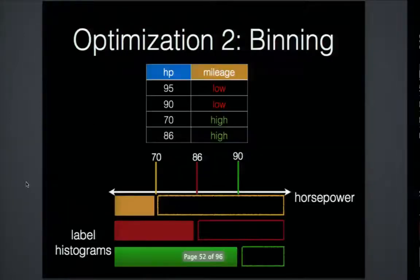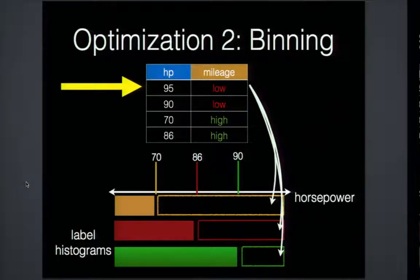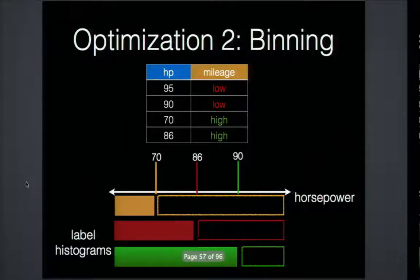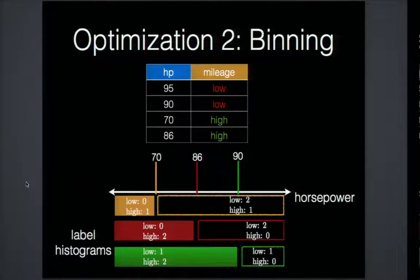The second optimization exploits the sorted order of splits. Using the example of predicting mileage from horsepower, we place splits on a line and observe each instance's contribution to split histograms. For instance, horsepower 95 doesn't satisfy any of the three splitting conditions and goes to the right-hand side. When horsepower is 90, it satisfies the green splitting condition 'horsepower ≤ 90' but not the top two. We repeat this for the remaining instances to produce split histograms for each split.